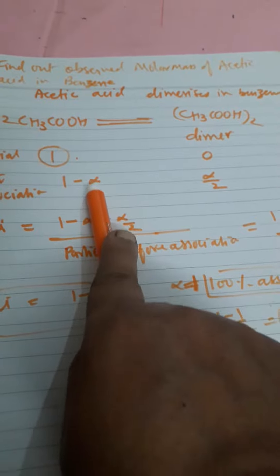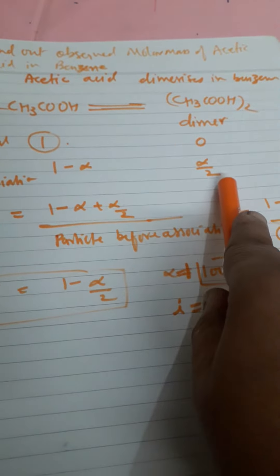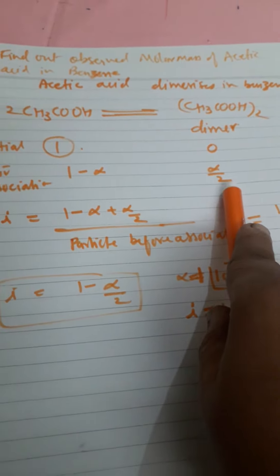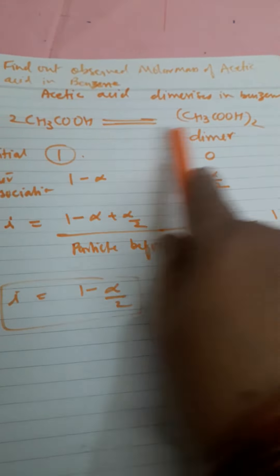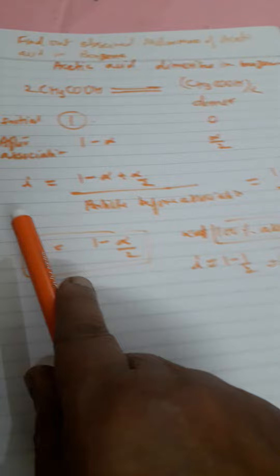If alpha particles are associated, then alpha by two. It will be alpha by two because after association it will become half. Here twice, here one, so it will be half. So I is equal to...